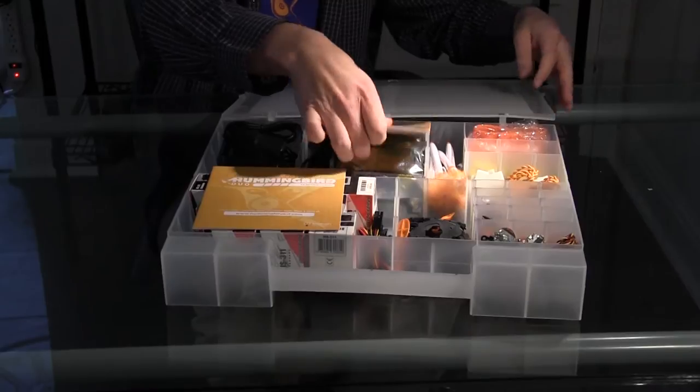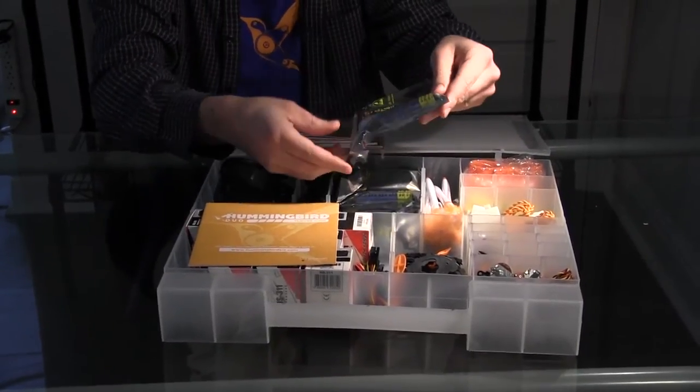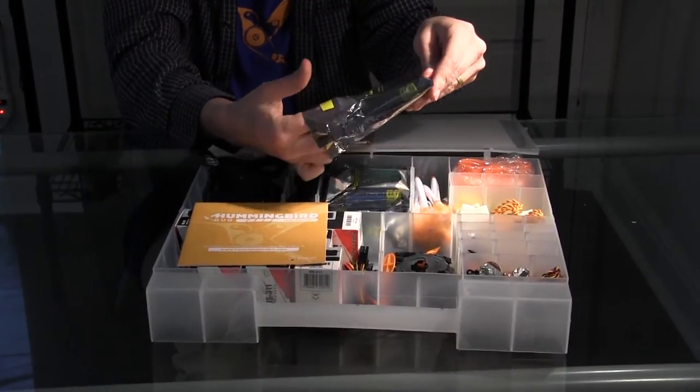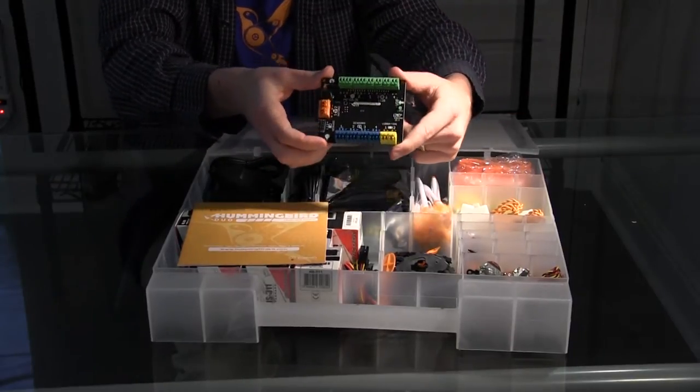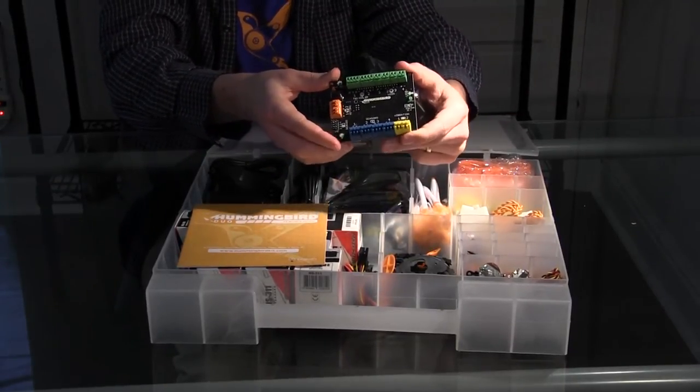So the kit contains four Hummingbird Duo controllers, so the brains of their robot and what they connect all the other electronics to.